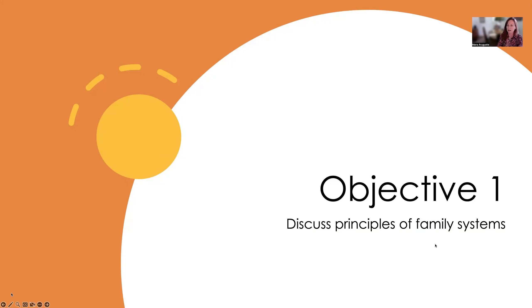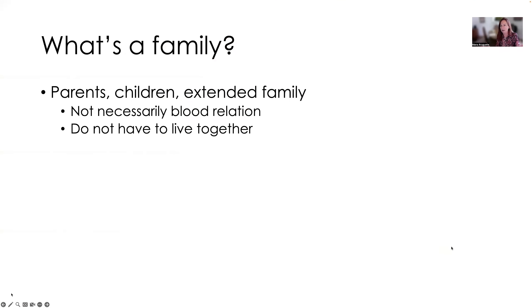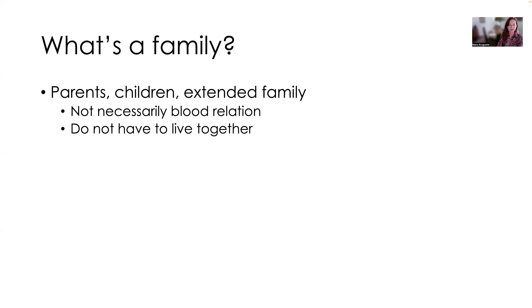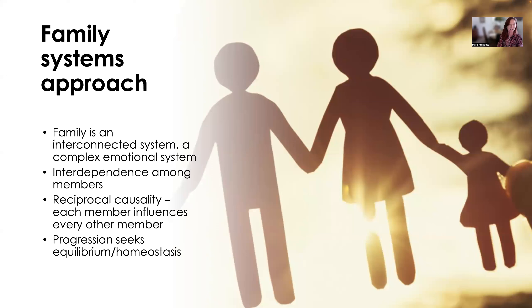Objective number one: we're going to discuss the principles of family systems. First thing is, what's a family? A family can be parents, children, extended family. But I don't want you to think too rigidly about what a family is, because these are not necessarily blood relations, though they very often are. And these are not necessarily people who live together either. So these are people who you're involved with in a family kind of capacity.